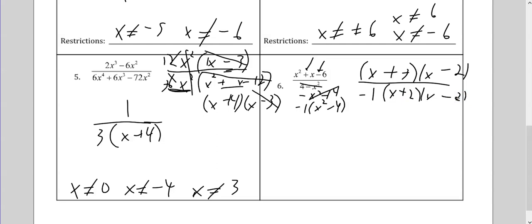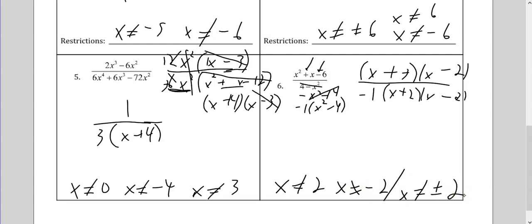Do not cancel before you say x cannot be positive 2 and x cannot be negative 2 — you can write it as x cannot be plus or minus 2. Now the fun begins: I cancel the x minus 2s, leaving x plus 3 on the top, negative 1 on the bottom, and x plus 2 in the denominator. That's it.